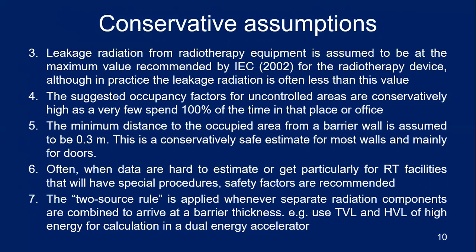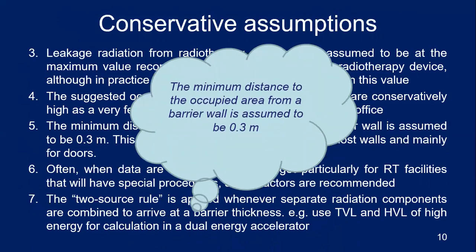Safety factors are recommended when data is hard to estimate, particularly for special procedures like TBI or radiosurgery. We use the two source rule whenever we have two radiation sources — for example, a linear accelerator with 6 MV and 15 MV. This means we use the high energy factors, specifically the TVL and HVL for the higher energy, in all calculations for a dual energy linear accelerator. The minimum distance to the occupied area from a barrier wall is assumed to be 0.3 meters, so during surveys, measurements should be taken 30 cm from the wall.